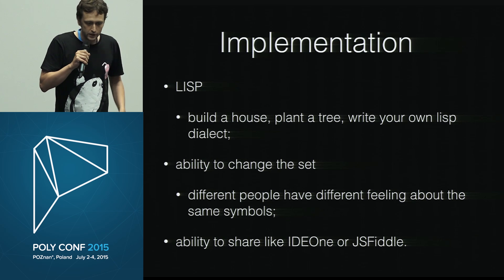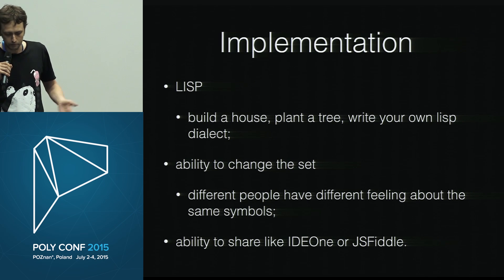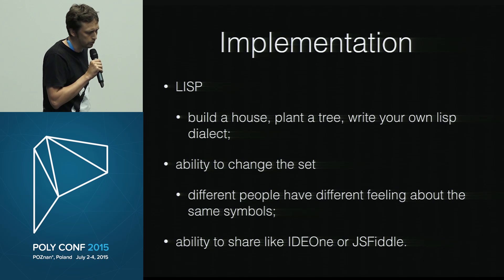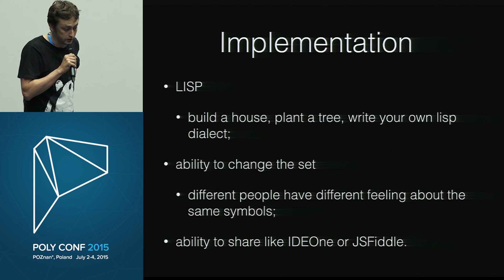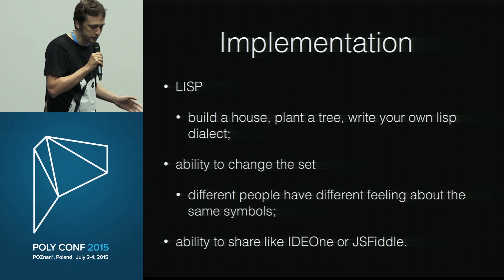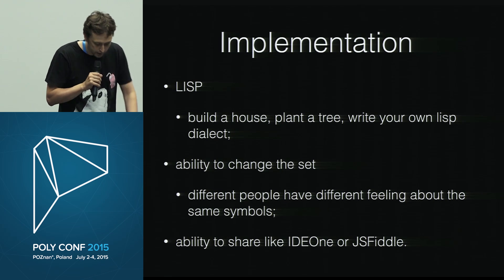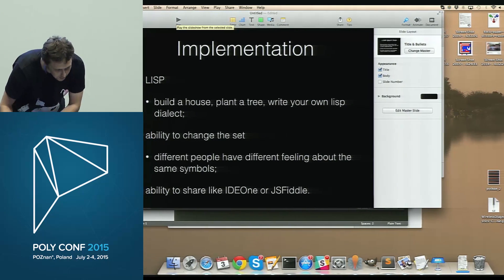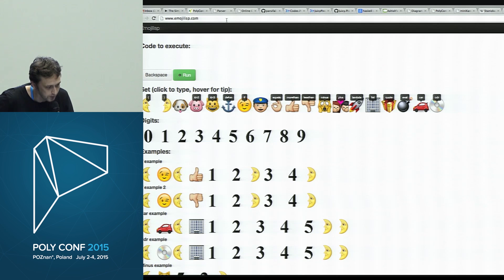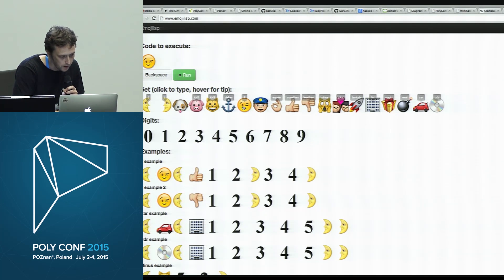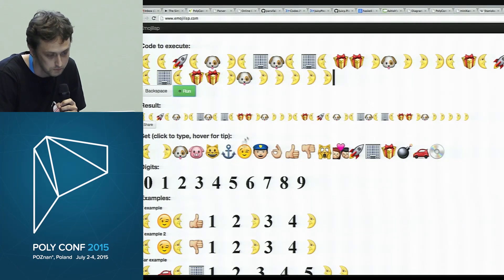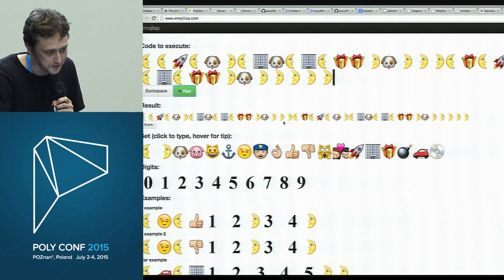As I started to imagine what emojis should do, I realized it could be not so obvious. So I decided to make the ability to change the set and to share these programs, like JSFiddle. Here it is. You could program with these emojis, or you could try something like a Quine — for example, this Quine evaluates to itself. And you could share the programs with a link.